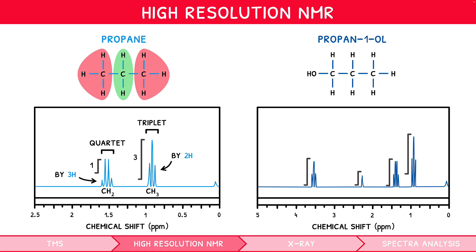We can therefore extend our common pattern for a terminal ethyl group: a triplet around 1, and a quartet around 1.5 to 4, with a ratio of 3:1. For propan-1-ol, since they express a ratio of 2:1:2:3, we identified the rightmost peak as the CH₃ environment, and the next as the CH₂ adjacent to it, the next as the OH.